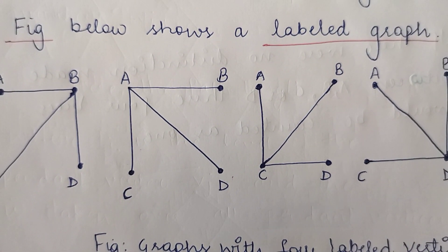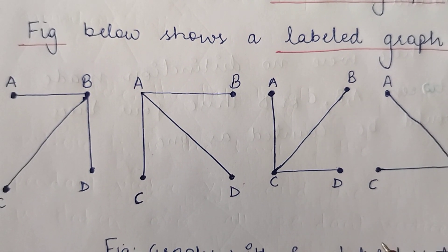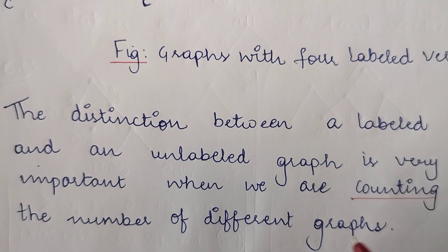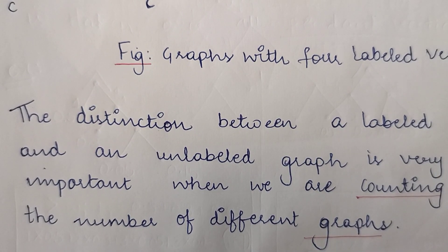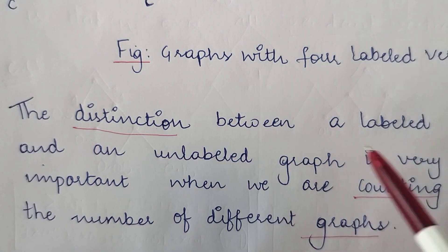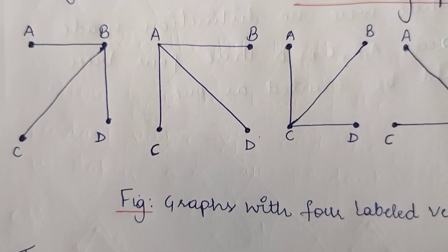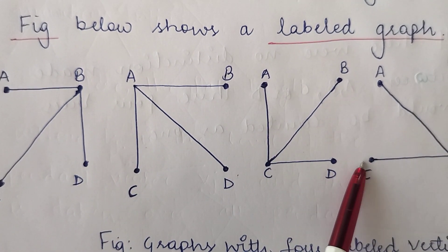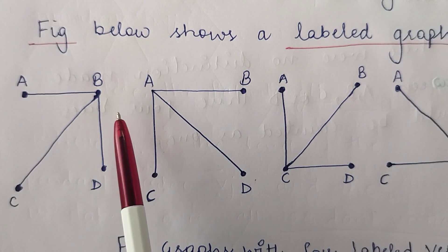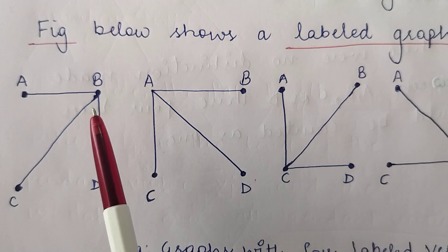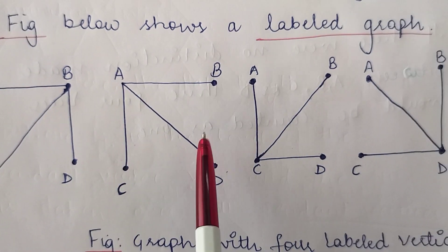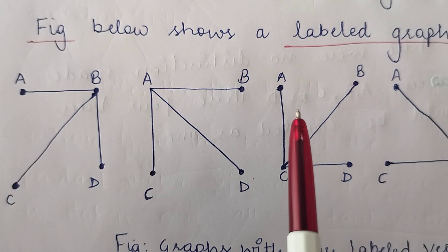So basically I can say that these are four graphs with four labeled vertices. Now the distinction between a labeled and an unlabeled graph is very important when we are counting the different number of graphs. When counting is required, there is a distinction between counting the number of labeled graphs and counting the number of unlabeled graphs, because labeling changes the entire scenario. For example, if you have to count these graphs, they will be counted as four different graphs, although all these graphs have a similar number of vertices, similar number of edges, and the incidence of edges and vertices is also the same. So I can call them isomorphic.